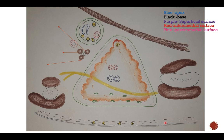I have drawn a line diagram so it would be easier to present in the exam. This is the color coding system: structures in blue are related to the apex, structures in black are related to the base, structures in purple are related to the superficial surface, structures in red are related to the anteromedial surface, and structures in pink are related to the posteromedial surface.